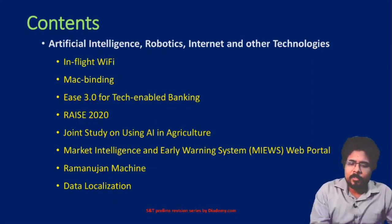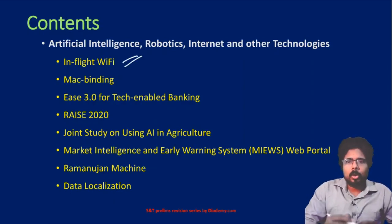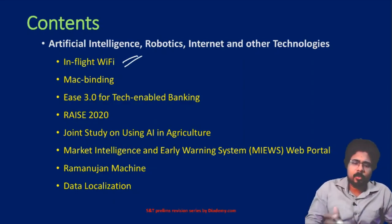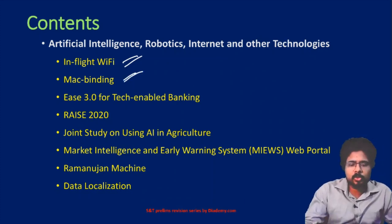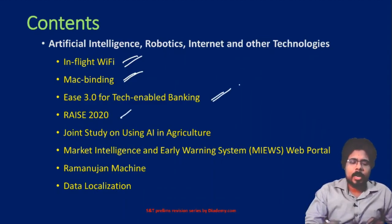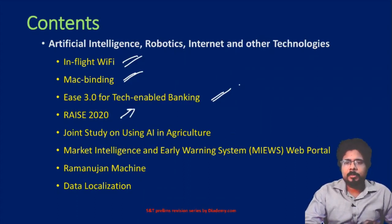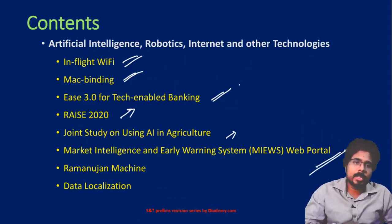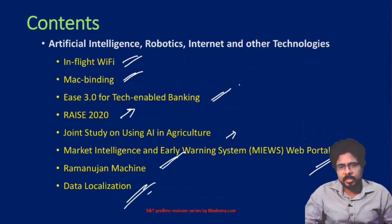In this lecture we will cover: in-flight Wi-Fi — what it is and how it works; MAC binding — what it is and why it was in the news; EASE 3.0; RACE 2020; a joint study on using artificial intelligence in agriculture and between which companies; the Market Intelligence and Early Warning Systems web portal — who launched it and why; the Ramanujan Machine; and finally, data localization.